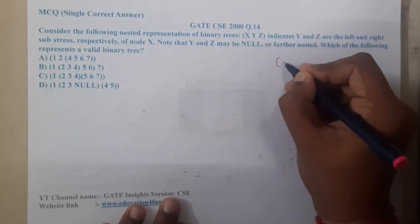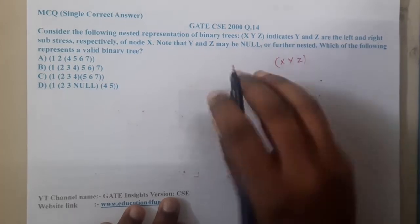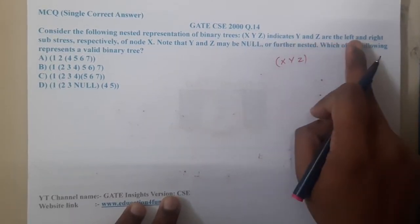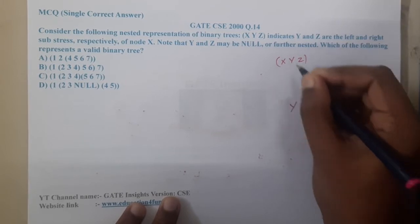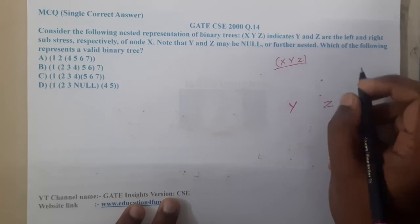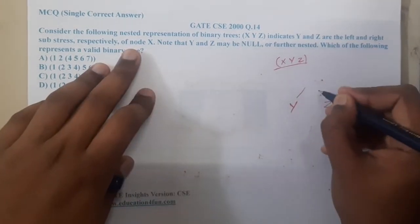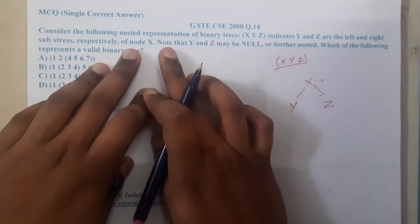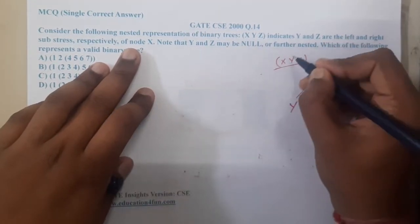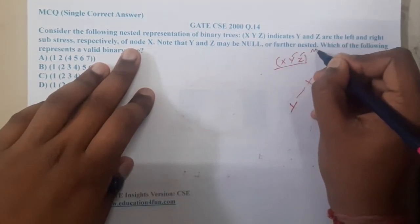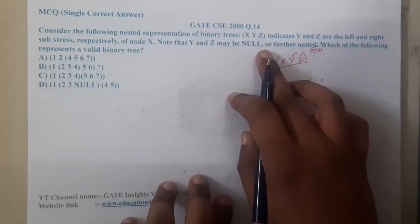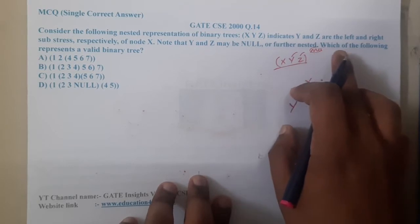So if we represent x, y, z in this way, they indicate that y and z are the left and right children. So y will be the left child and z will be the right child, meaning x will be the root. Note that y and z may be null — in some situations they could be represented with null whenever there are no children.